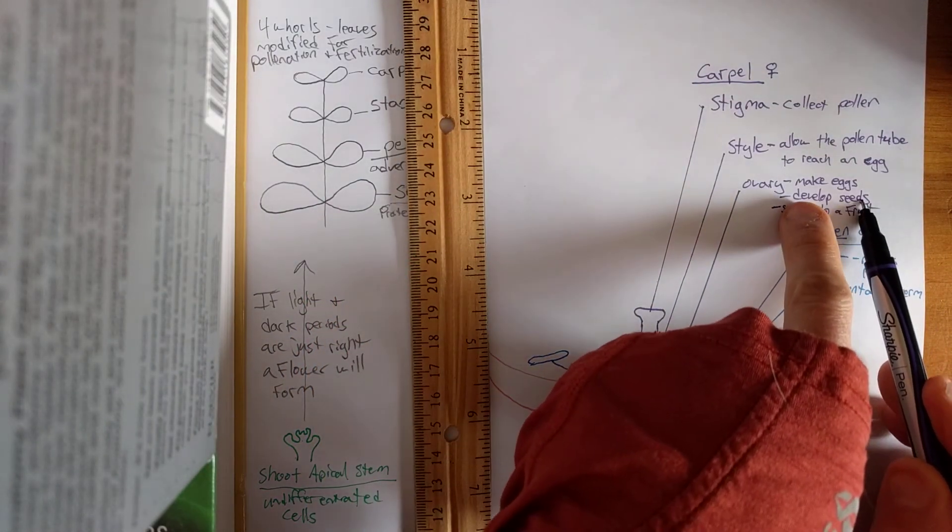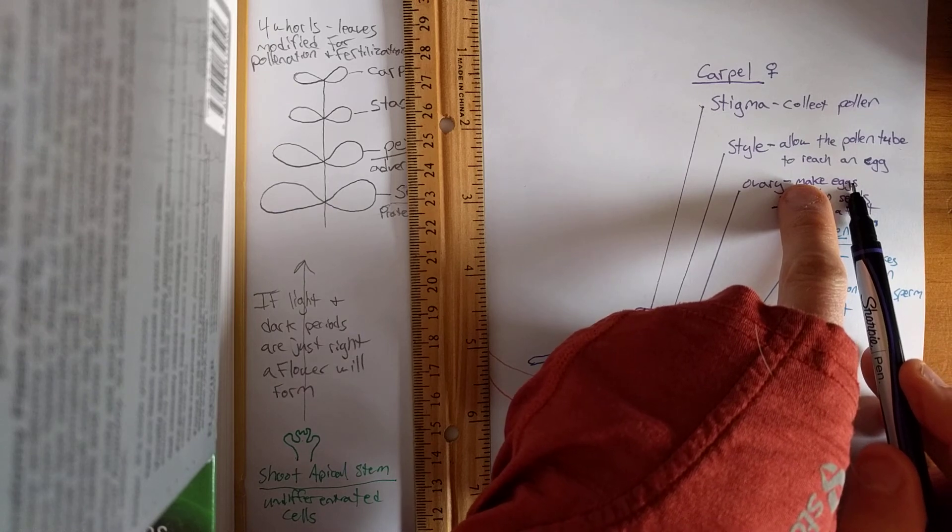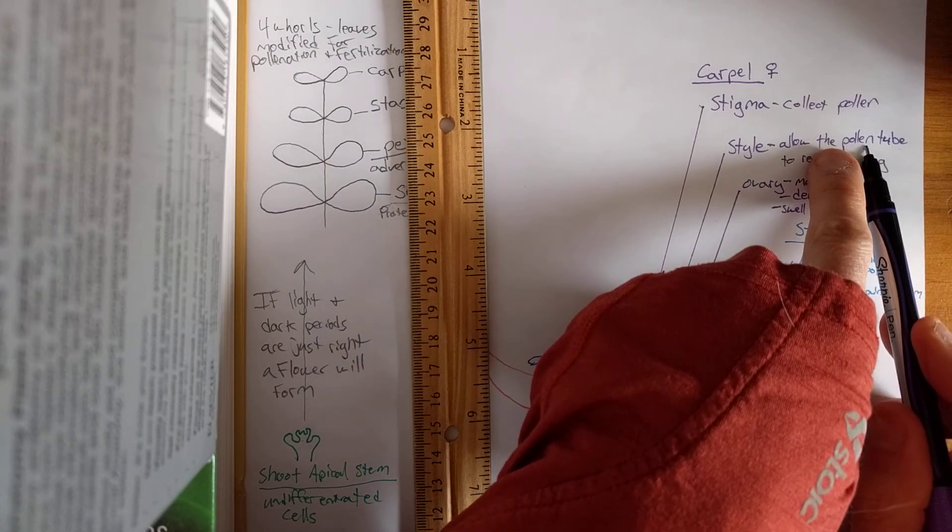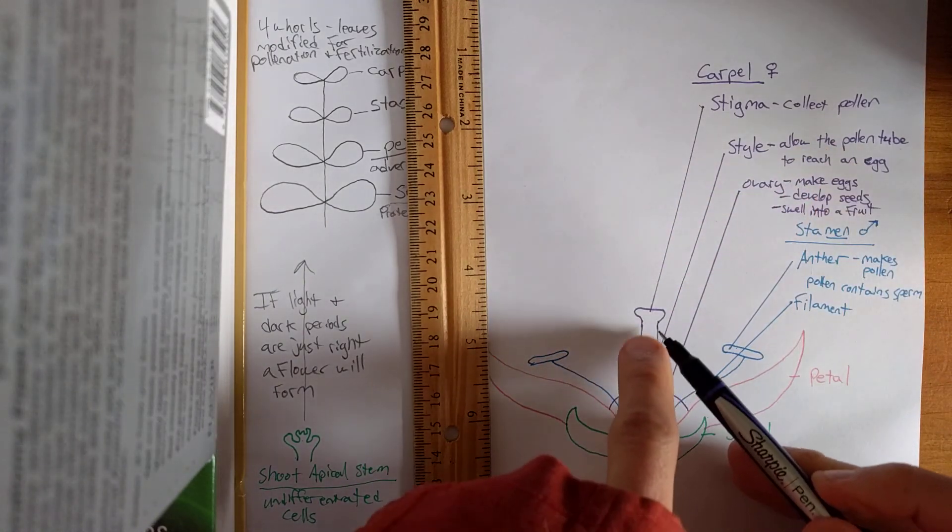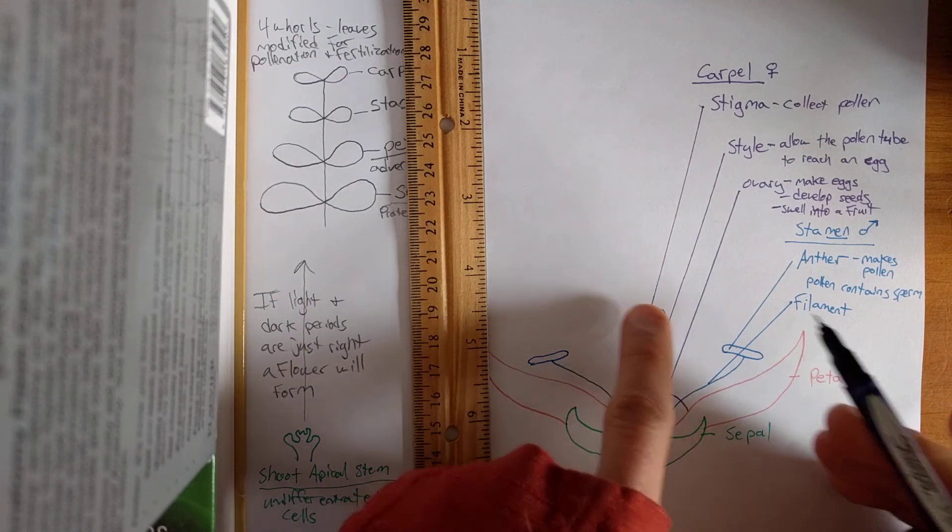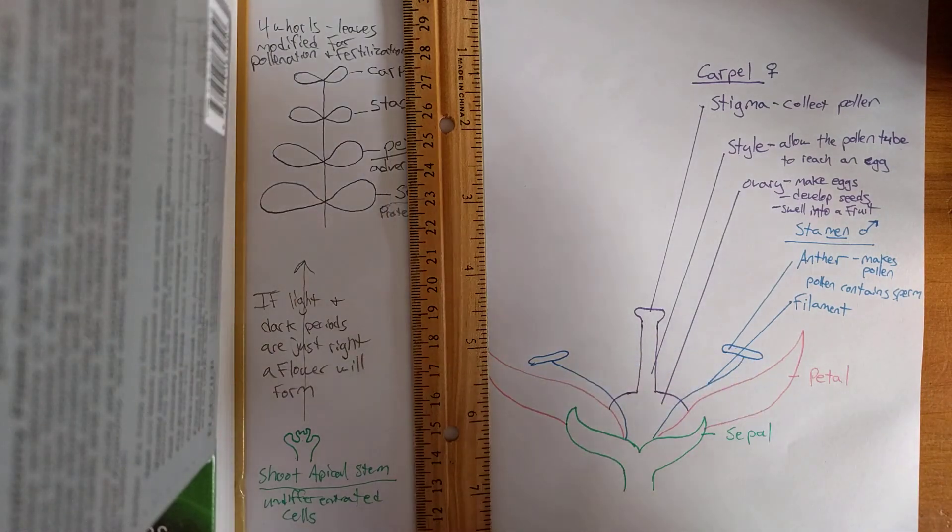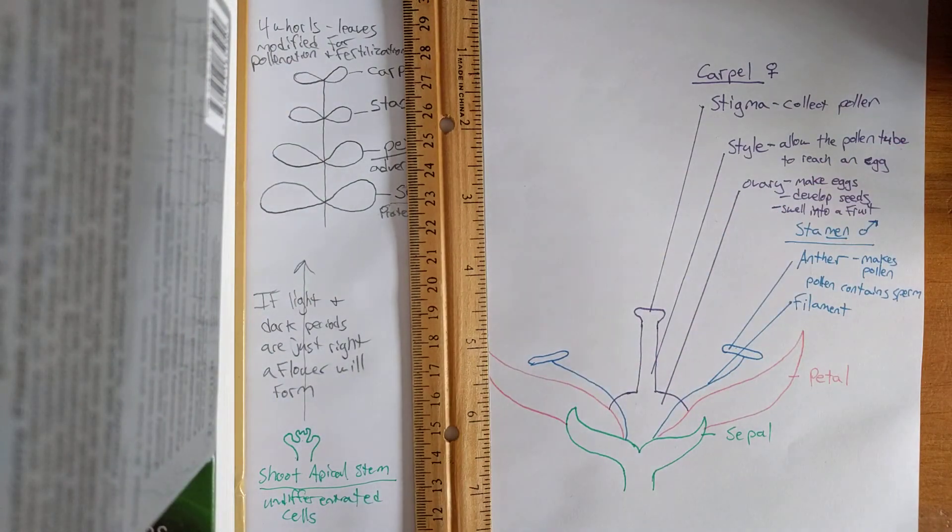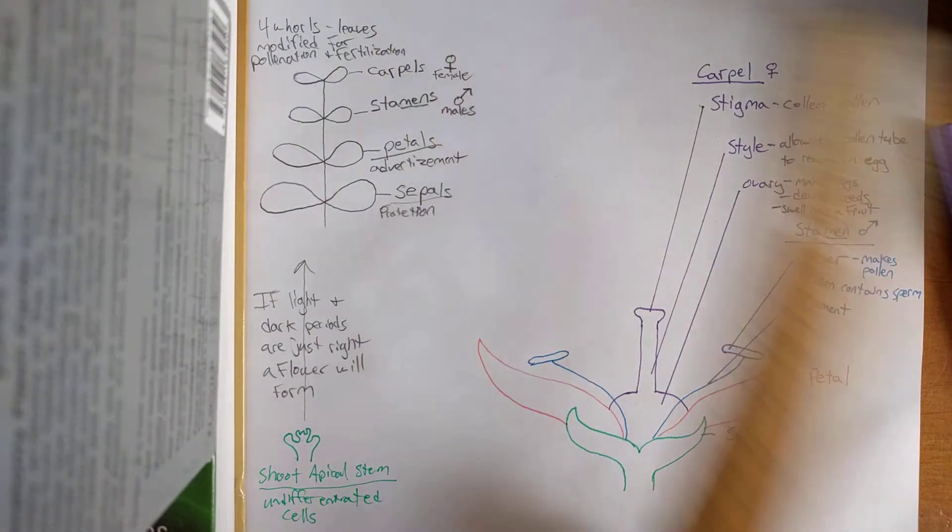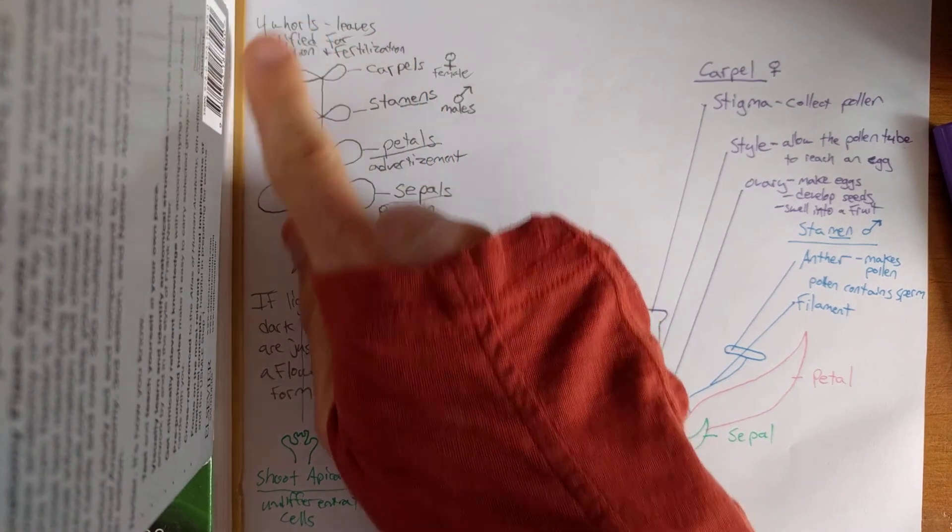Alright, that fruit will contain the seeds that were developed from the eggs. They were fertilized by a pollen tube that came down the style from the stigma. That hopefully it was pollen from some other plants anther. That got brought by a pollinator to this flower. That is all I have for you.